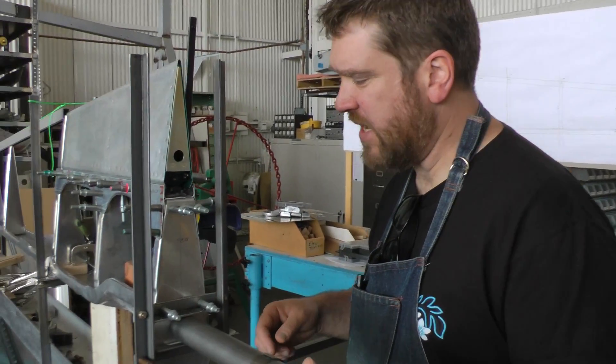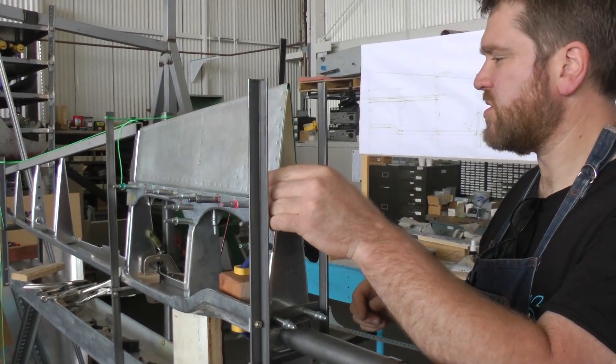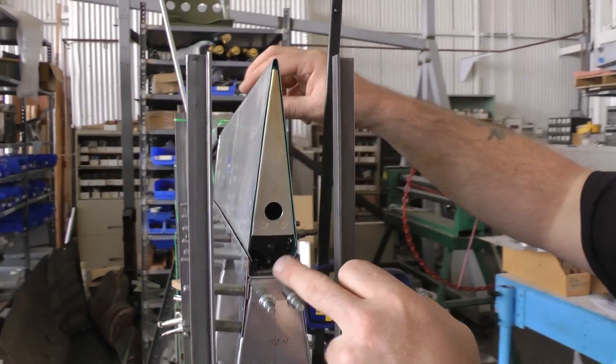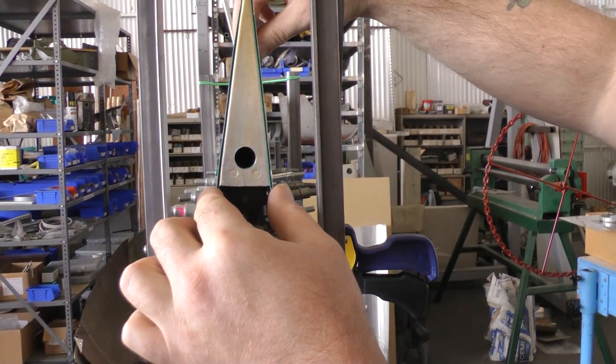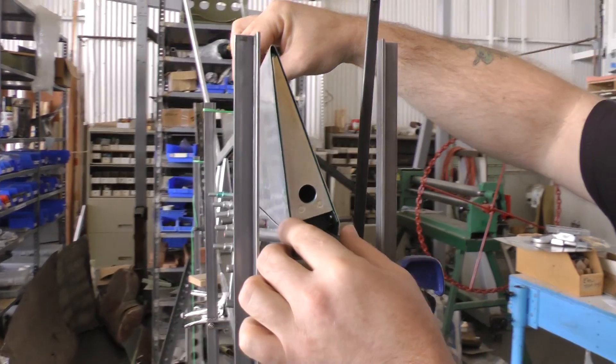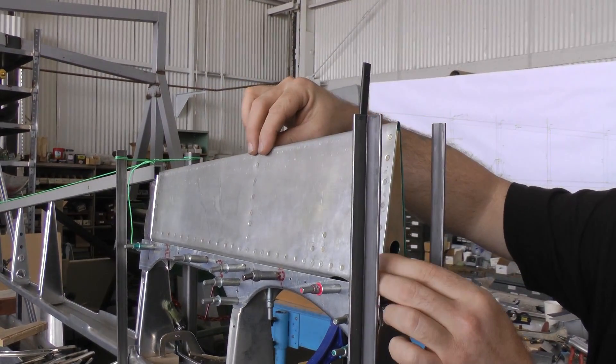We're working on the elevator again today. It's coming along slowly. We managed to make all the hinge pieces and everything to make the trim tab attach. You can see it's functional. The trim tab is moving on the elevator.